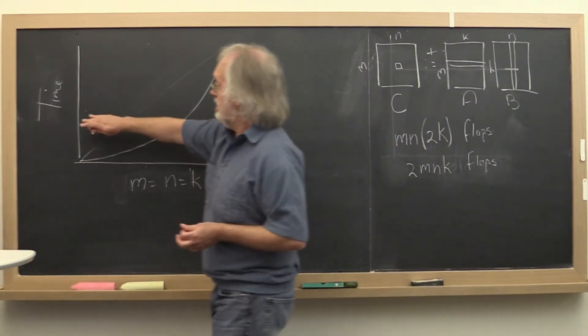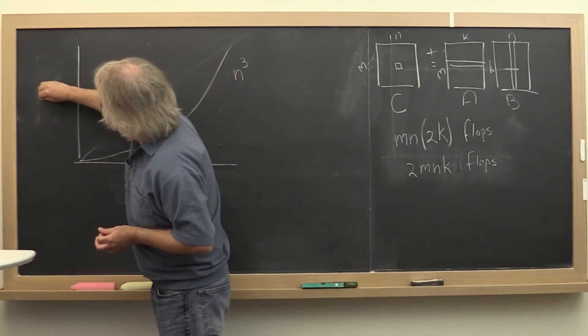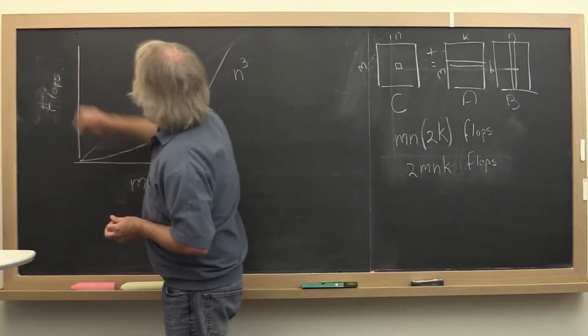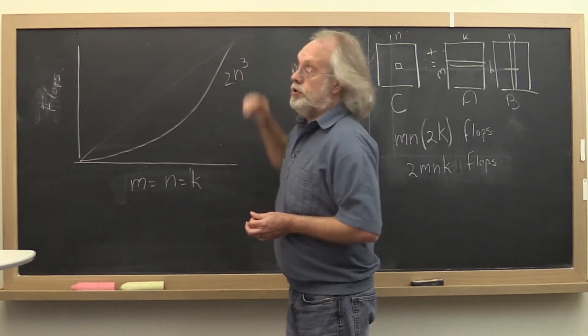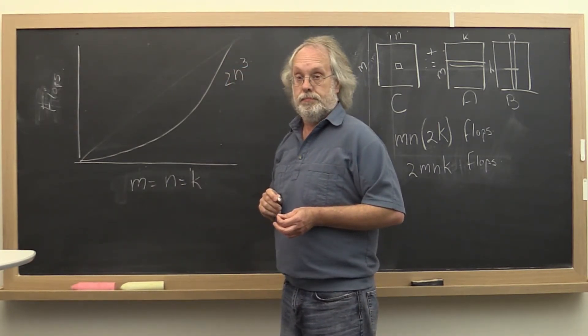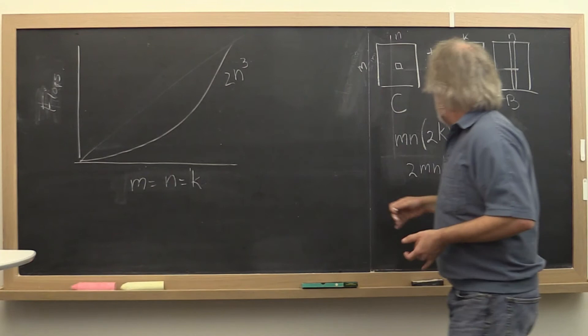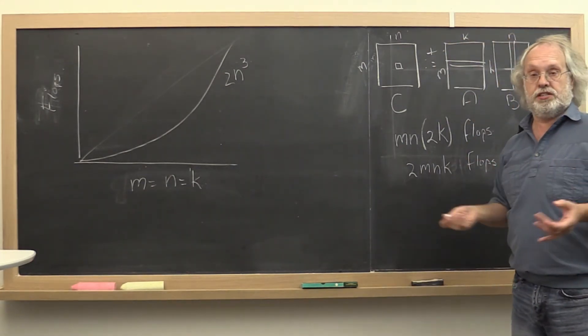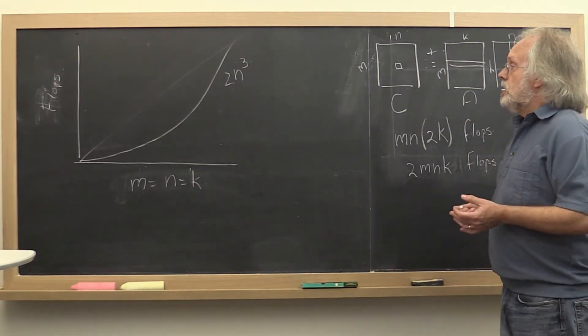If instead here we would have plotted the flops required, then it would be 2m cubed. And we're making the assumption here that the floating-point operation takes constant time.